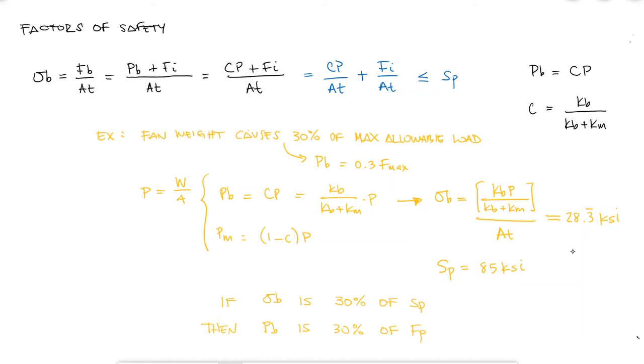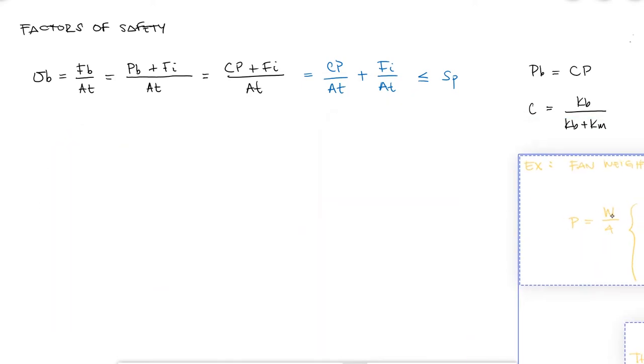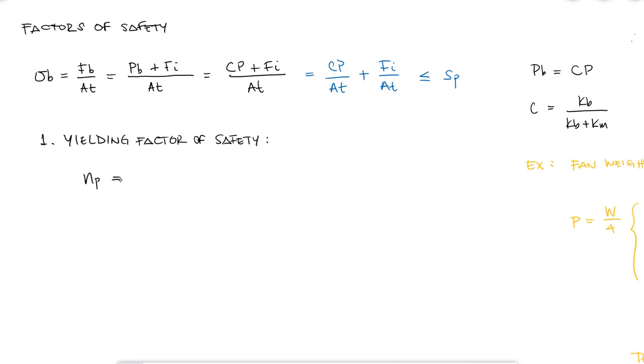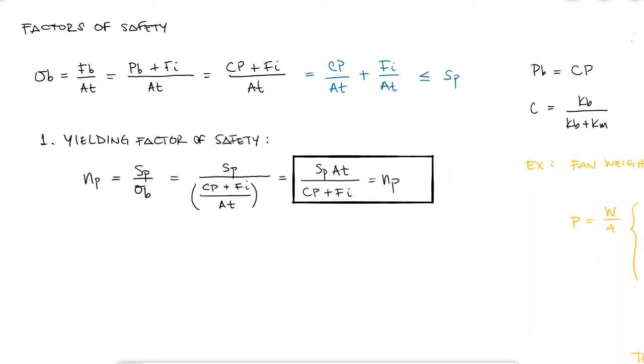Technically, the preload could generate the other 70%, but then that would mean that the factor of safety is exactly 1. In general, the yielding factor of safety would be defined as SP over sigma B, or by substituting what we just defined as sigma B, the factor of safety can be written as SP AT over CP plus Fi. Since it's common to load a bolt close to the proof strength, this value will in fact be close to 1.